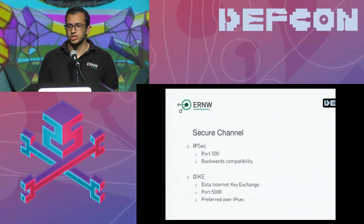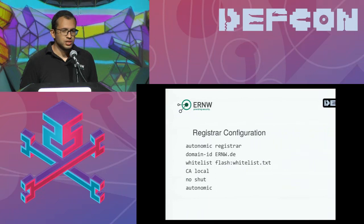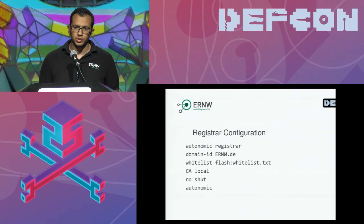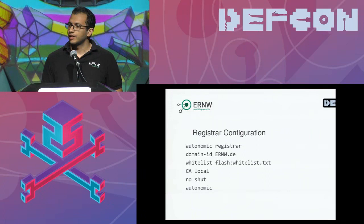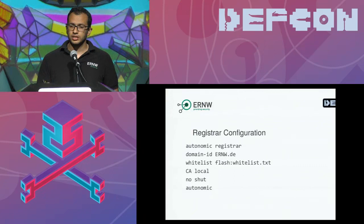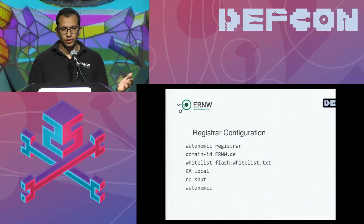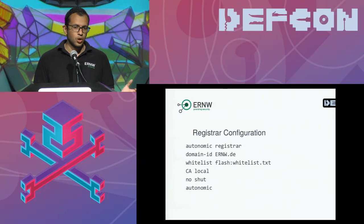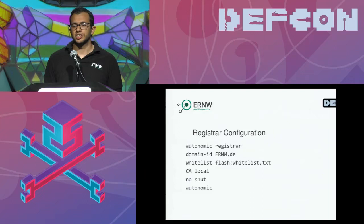What's the register configuration? Five commands total. First, define your domain name with 'domain ID'. Optionally define a whitelist — if you don't, every connected device is accepted. Define which certificate authority to use: a dedicated one by IP address, or 'CA local' if the register itself issues certificates. Finally, start services by writing 'autonomic'. That's all — nothing much to write.